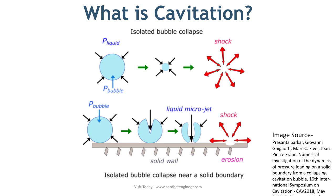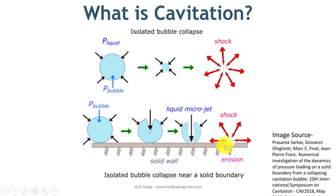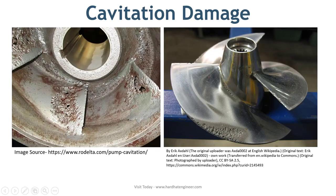There are many reasons for vapor bubble creation, which I will explain in a minute. First, look at the image shown here — it shows collapsing of bubbles near the surface and away from the surface. When a vapor bubble collapses far from the surface, it creates a shock wave inside the liquid. When it collapses near the surface, the pressure jet hits the surface with pressure in the range of 10,000 to 15,000 psi, creating pits and eroding the surface.